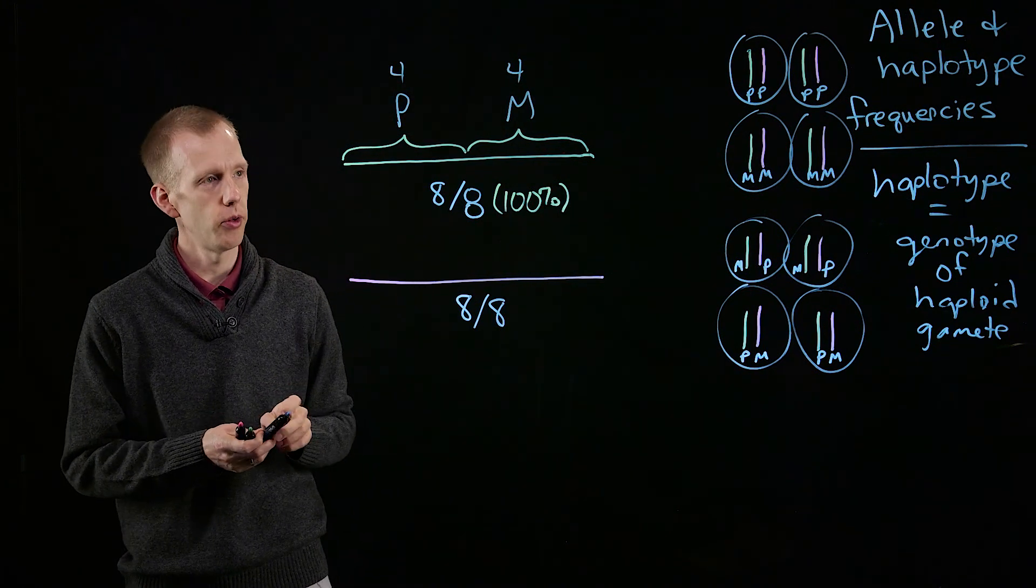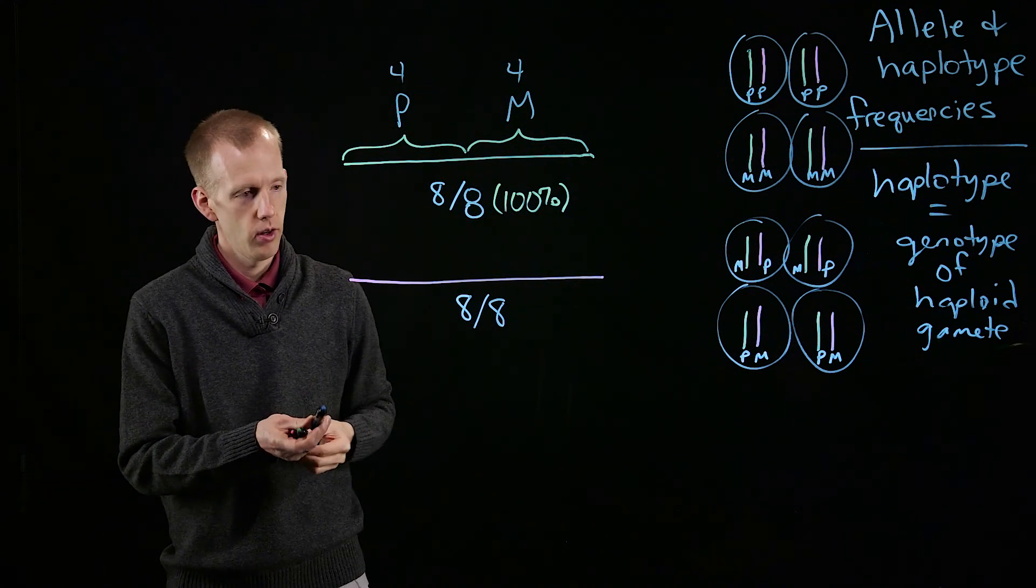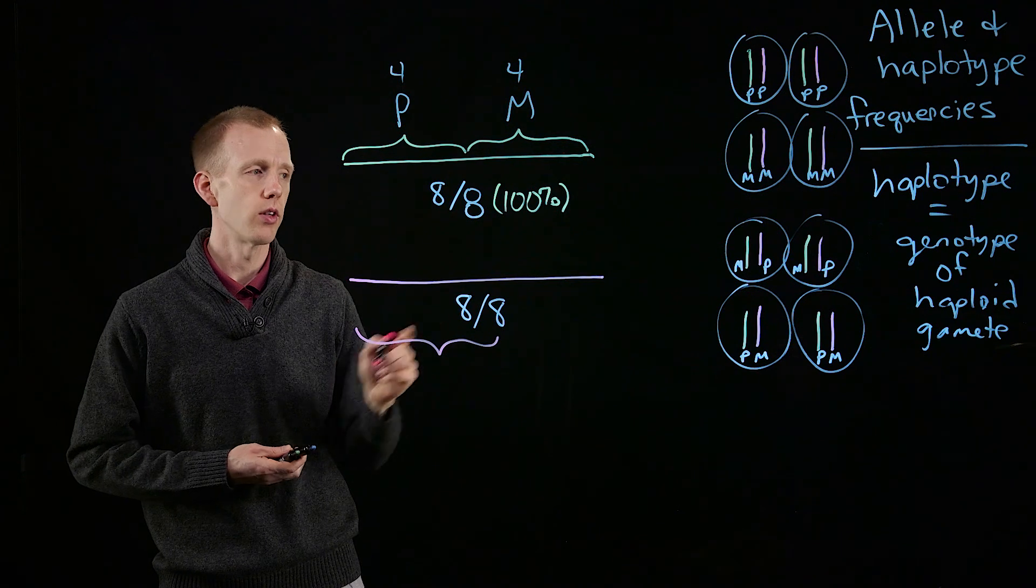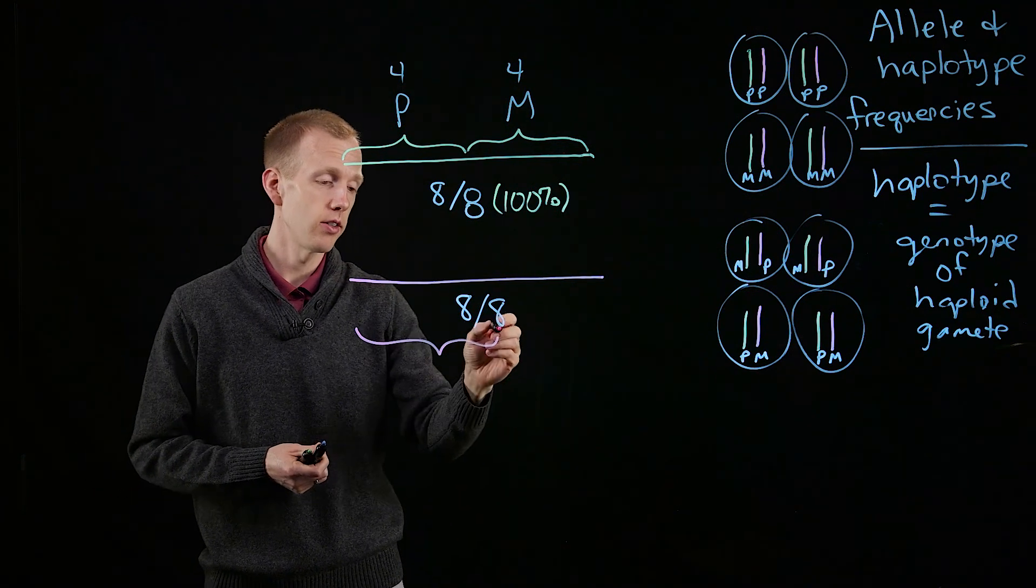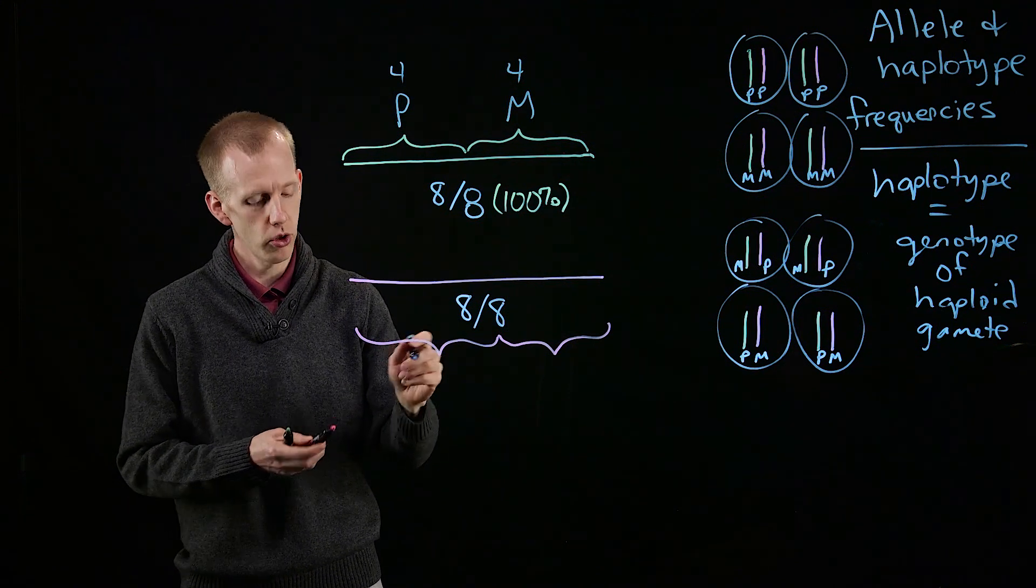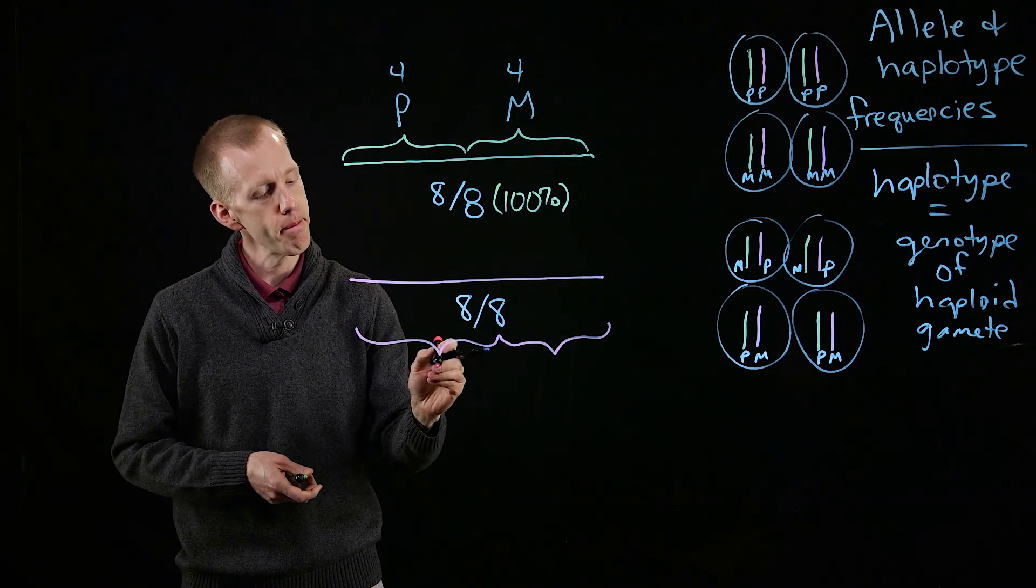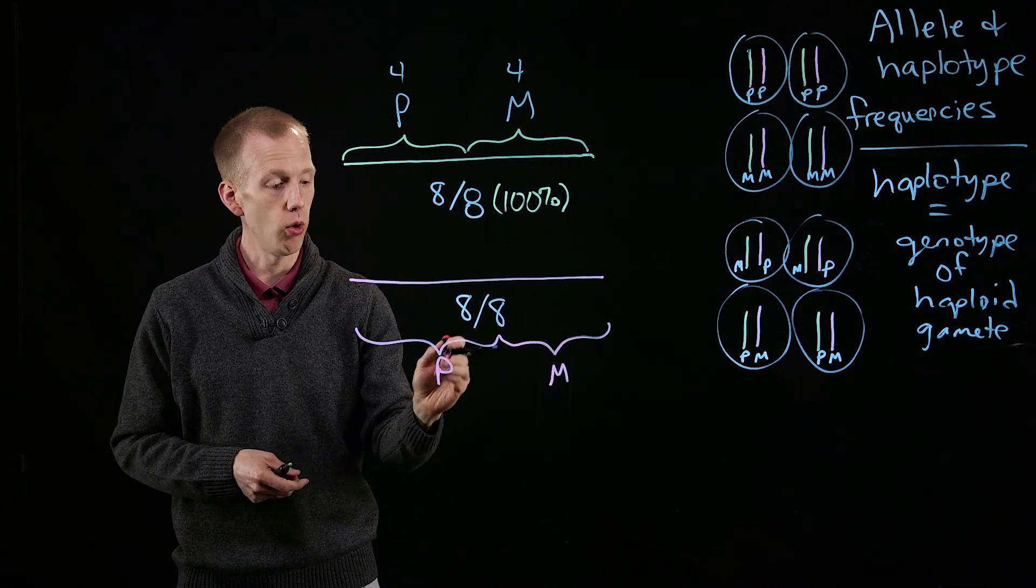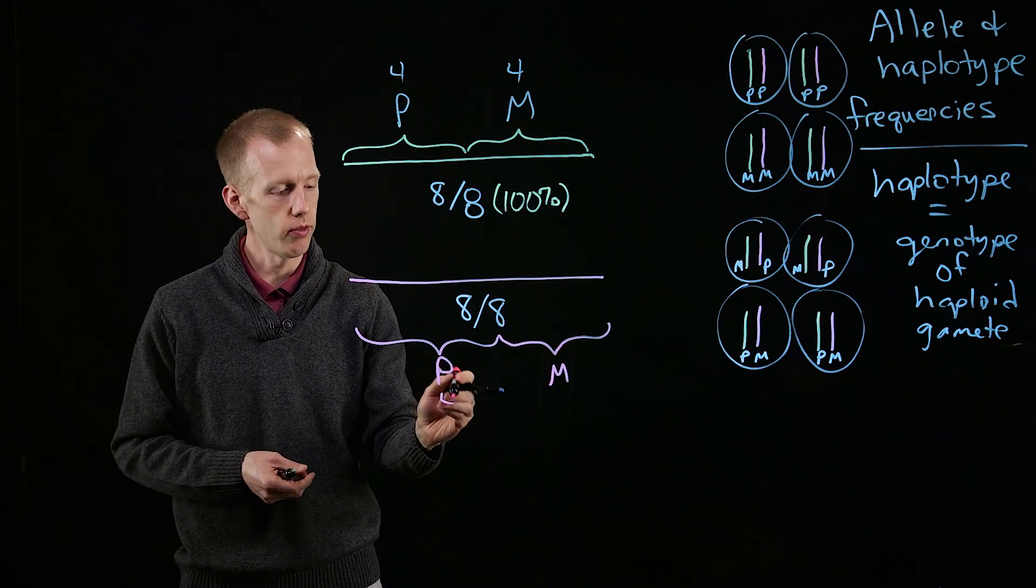And the same is true for this chromosome. Half of those myocytes are going to have the maternal version of this chromosome, and the other half, four, will have the paternal version of that chromosome.